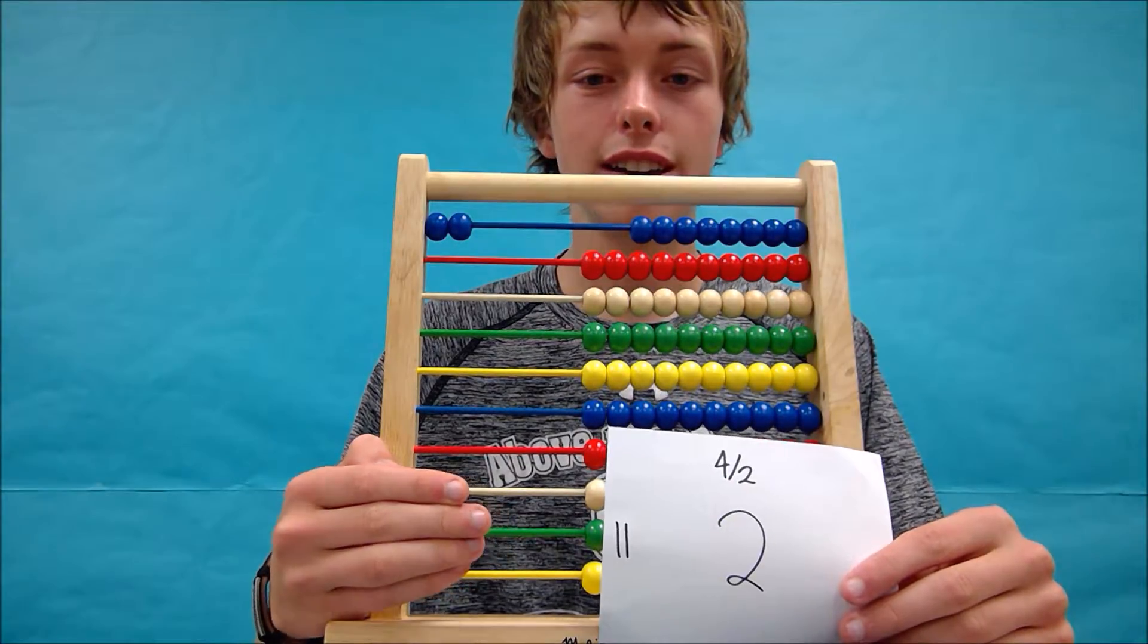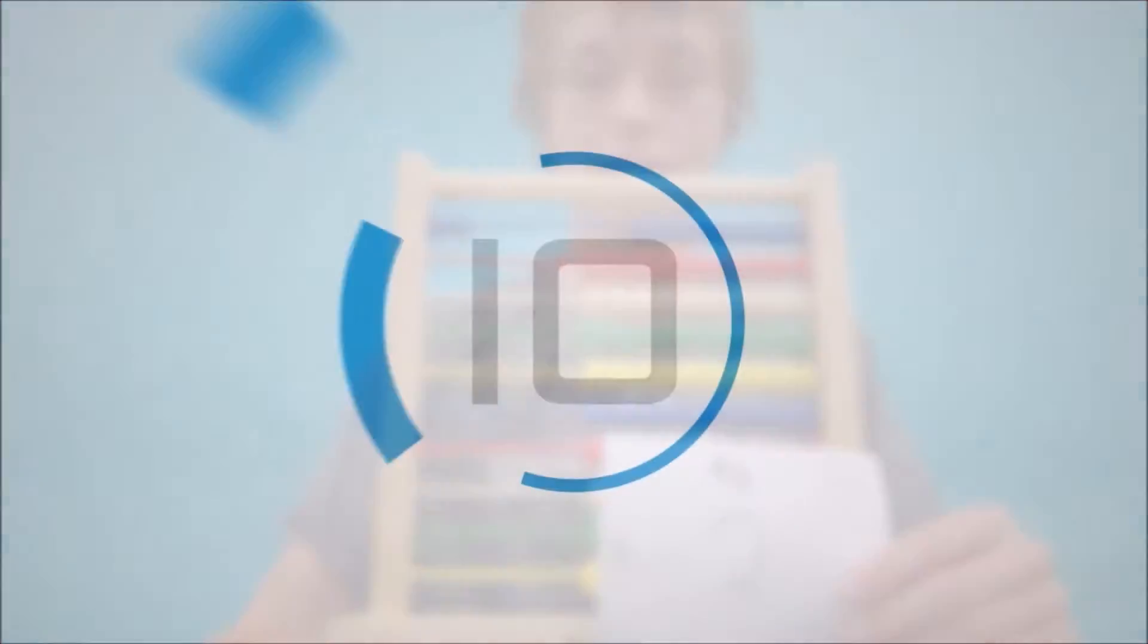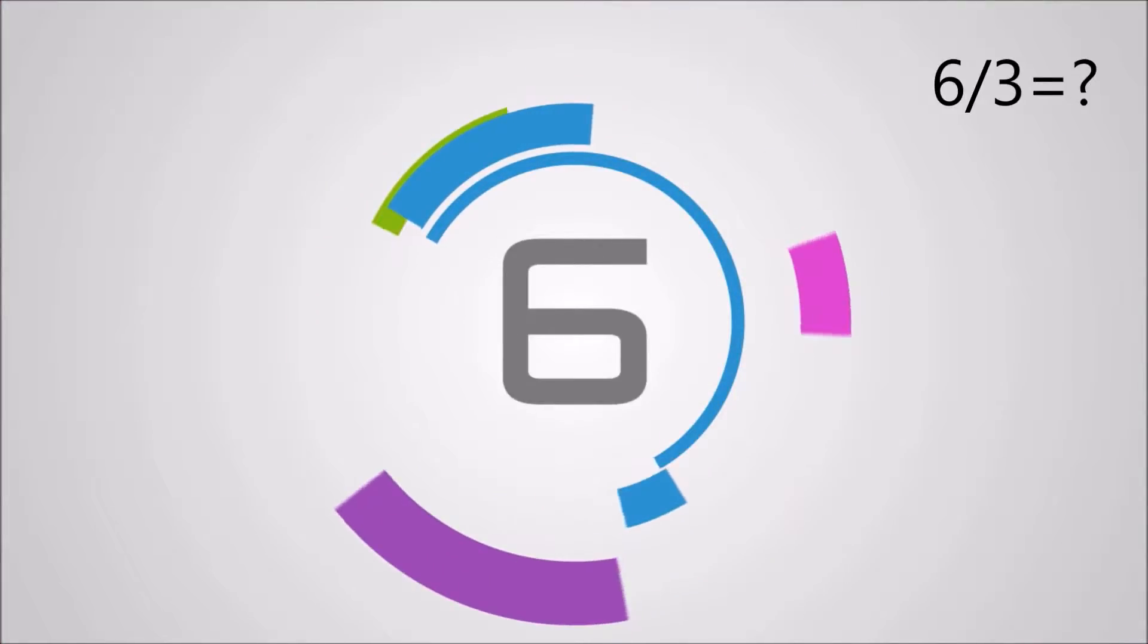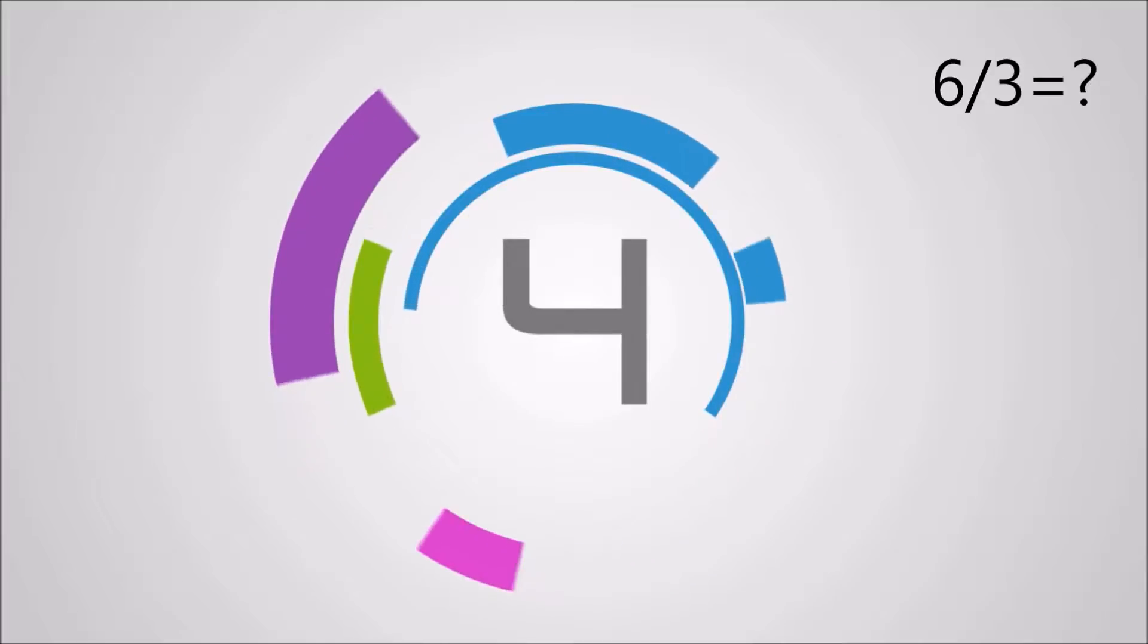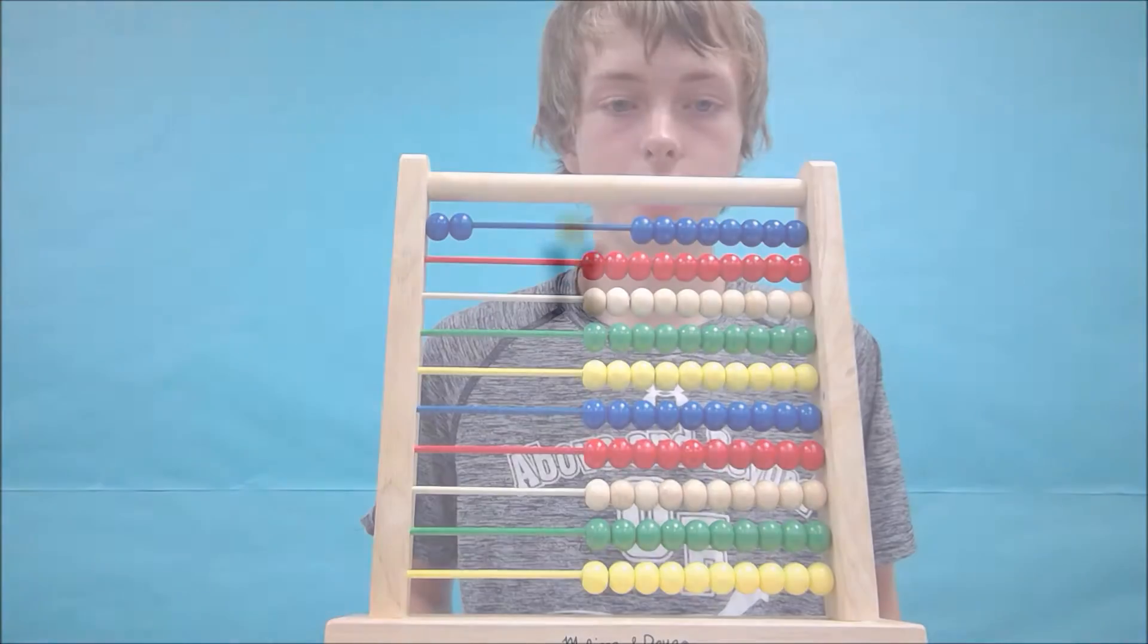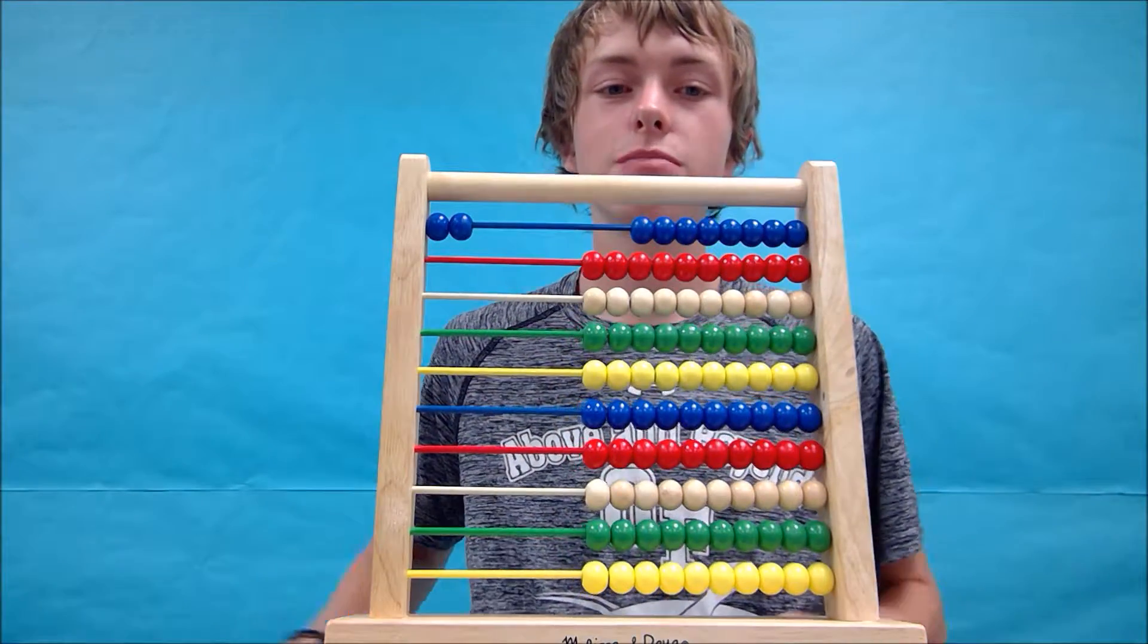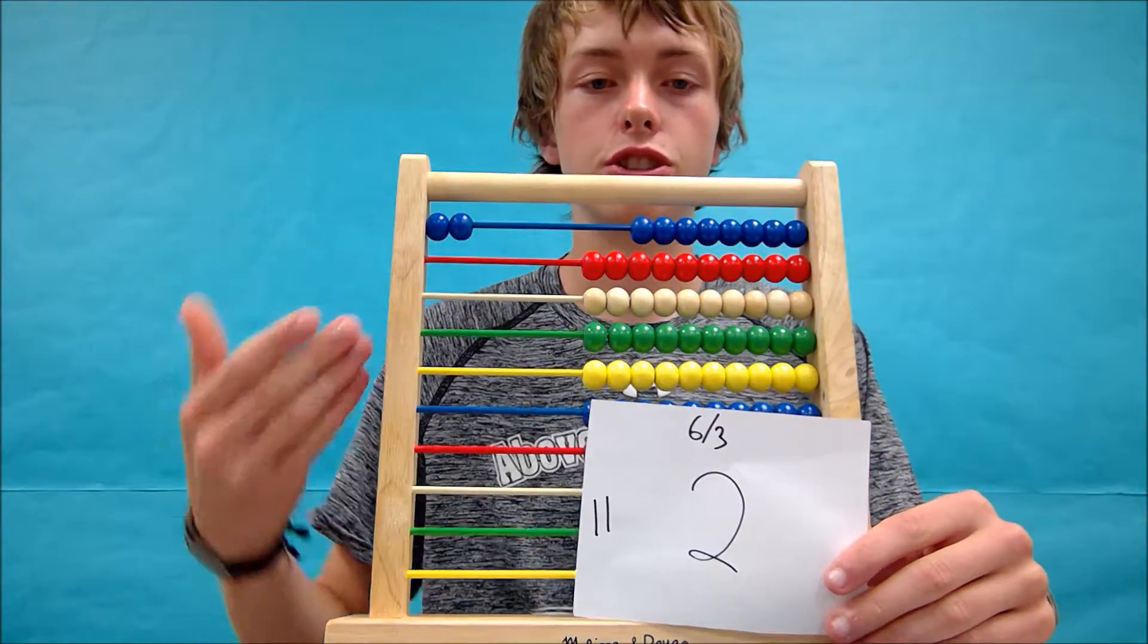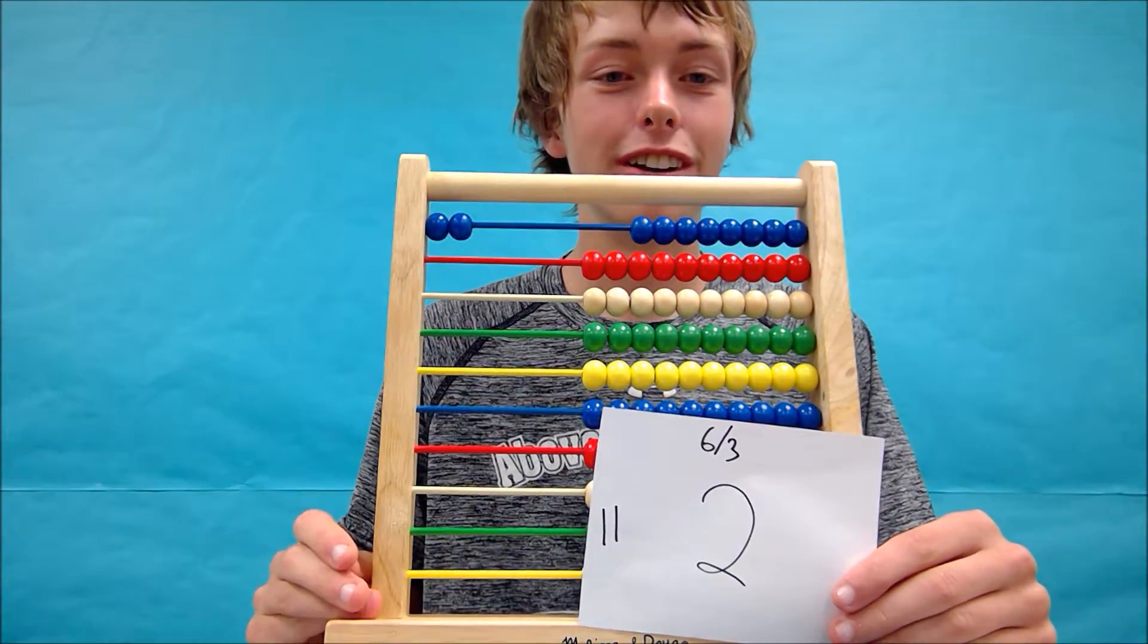Let's try 6 divided by 3. Your answer should again be 2. Whether you used your tallies or your abacus, it should be 2. Did you get it? Well done.